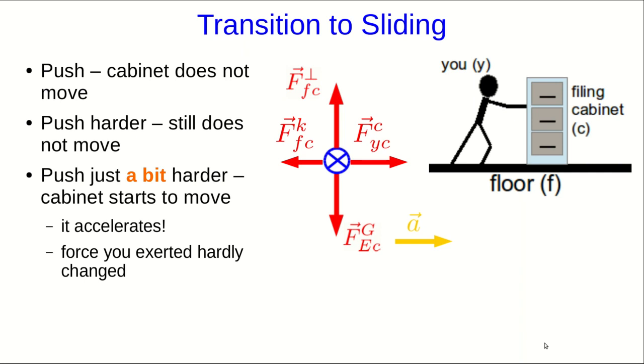What do we conclude about this? We know that when the filing cabinet starts to slide, the static friction must be replaced with the kinetic friction, and so apparently, the kinetic friction must be smaller than the static friction that it replaced.